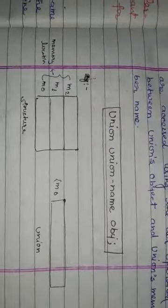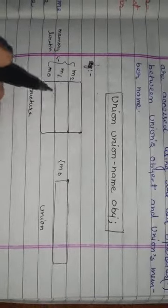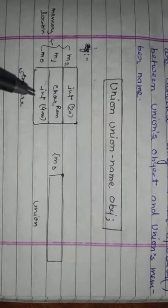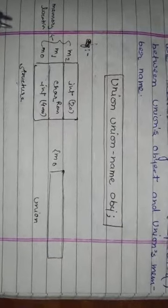In a structure, each particular element has its own memory location. For example, integer type data stores age as 20, character type stores name as 'Ram', and integer type stores fee as 4000. This way, each element in a structure has a different memory location, and this is how a structure is declared.